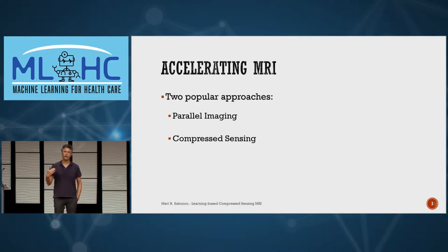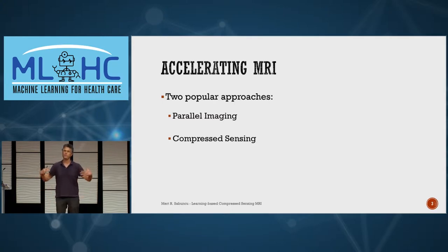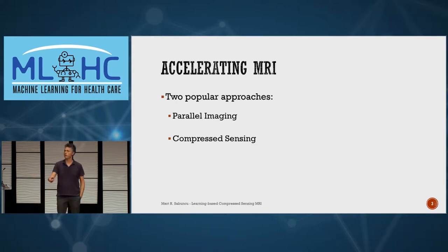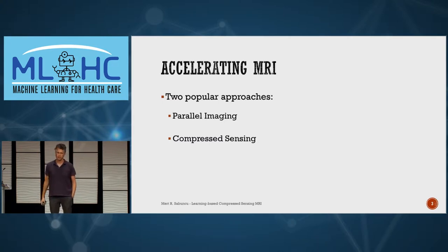In terms of accelerating MRI, there are broadly two strategies. The first is parallel imaging, where instead of a single receiving coil you use multiple coils and acquire data in parallel. The second is compressed sensing, where you acquire less data than needed to fully recover your images and try to get away with that — that's what I'll focus on today. These two strategies are not mutually exclusive; many MRI acceleration technologies combine both. The main challenge of parallel imaging is it requires hardware modification, whereas compressed sensing does not.